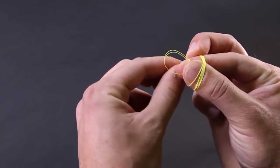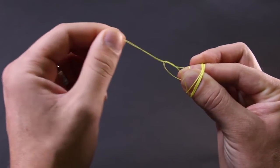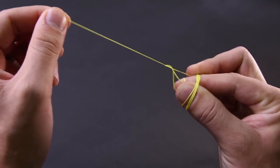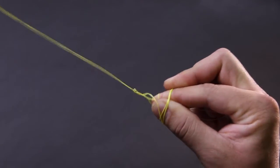And then you're going to bring the tag end through that loop. You're going to want to do this slowly. As you start pulling that tag end those wraps will come off those two fingers. Do it cleanly and make sure nothing gets tangled.